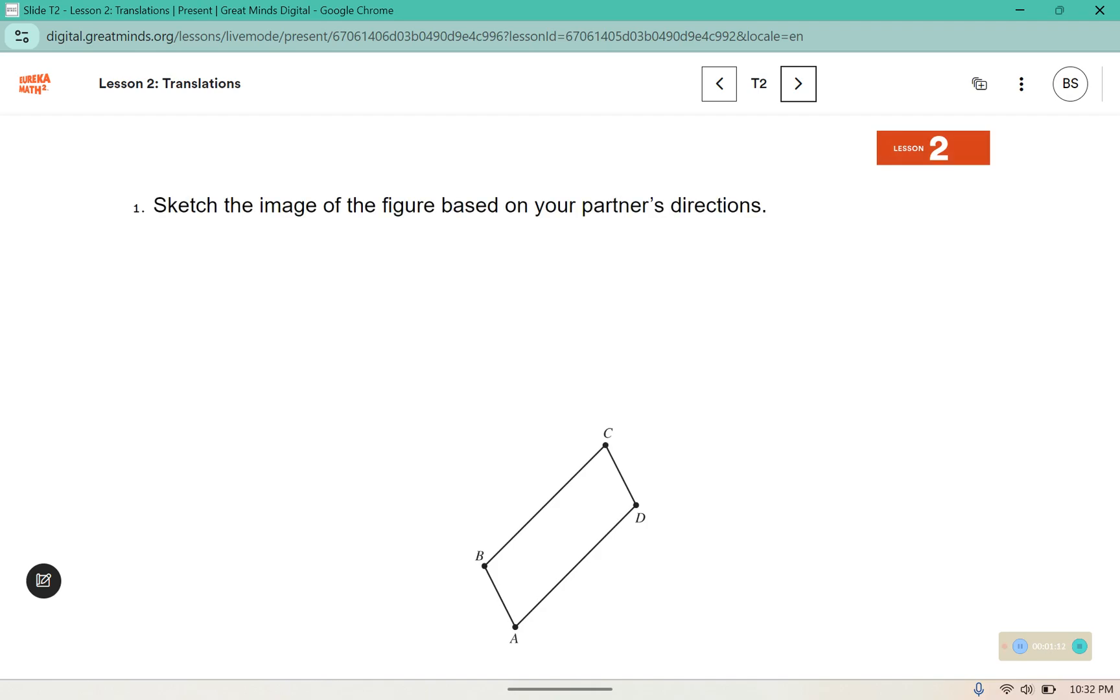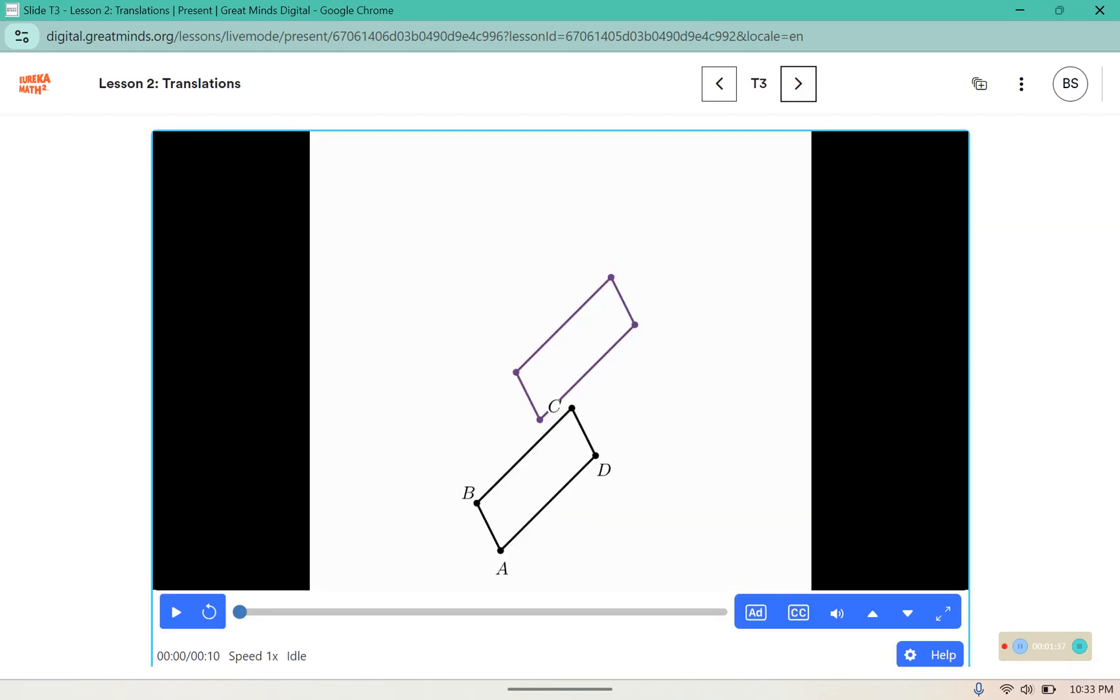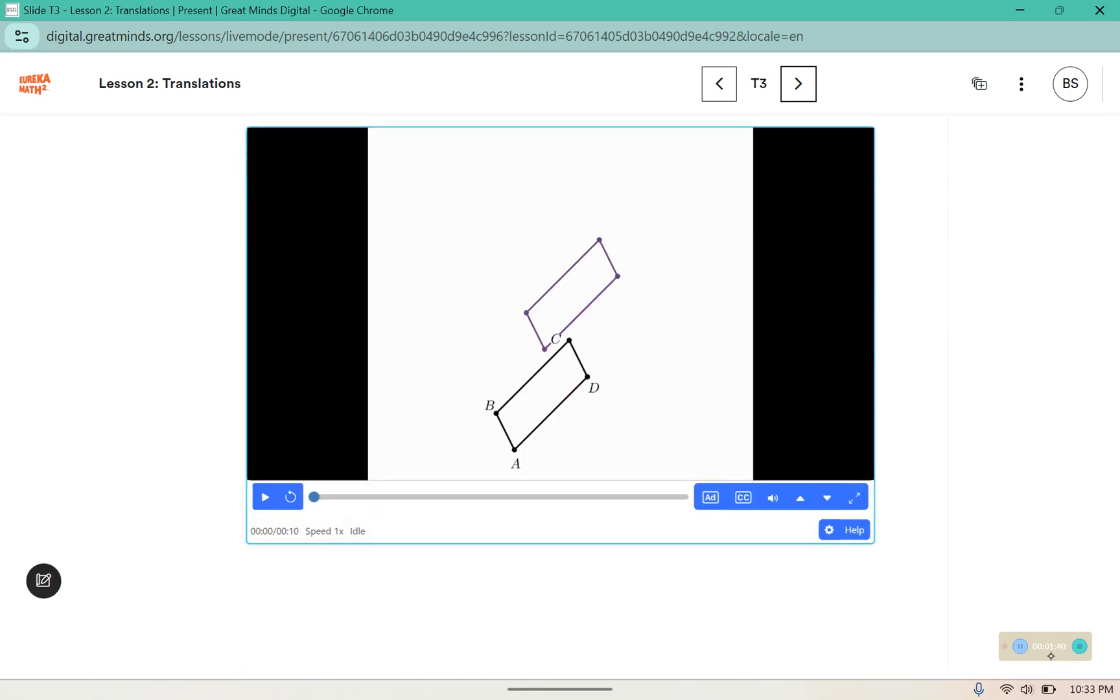Number one says sketch the image of the figure based on your partner's directions. So in class, we're going to have one person facing the board and one person facing the opposite direction so they can't see this next part. If you have a friend, go ahead and try this with them. One person watching the screen describing how to move your original figure. Here we go. The first partner looking at the screen, describe how to move the original to its image.